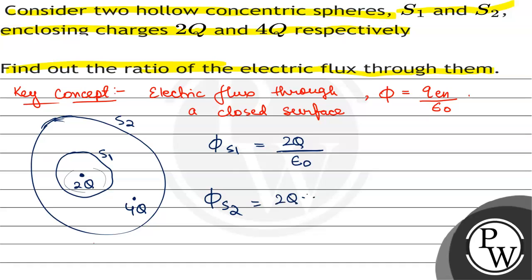That will be equal to 2Q plus 4Q, which is 6Q by epsilon naught. Therefore, φ S1 divided by φ S2 will be equal to 2Q by epsilon naught divided by 6Q by epsilon naught which will be equal to 1 by 3.